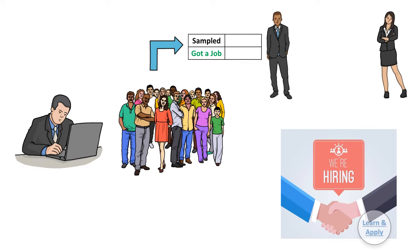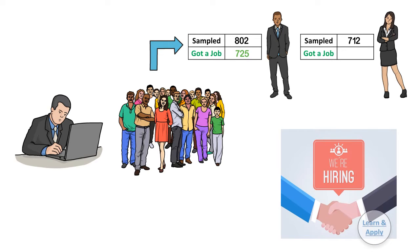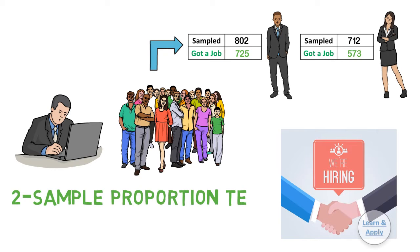He sampled a total of 802 male students, out of which 725 got a job in the summer. Similarly, he sampled 712 female students, out of which 573 got a job in the summer. The officer then performs a 2 sample proportion test to determine whether a male or female student is more likely to get a job in the summer.